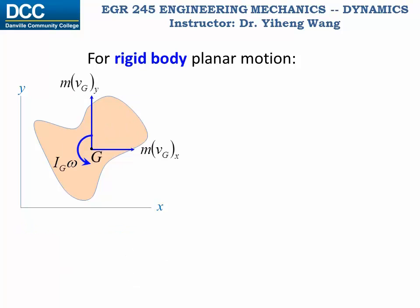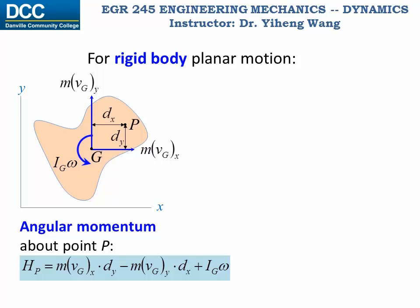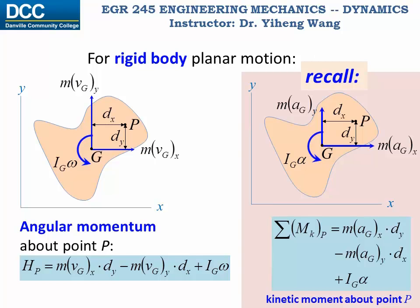Angular momentum is always calculated about a reference axis or reference point for planar motion. To calculate the angular momentum about an arbitrary point P, we treat the linear momenta as if they are forces and calculate their moments about point P, then add IG·omega as if it is a free couple moment. dx and dy are the moment arms for the linear momenta. This approach should look very familiar — it is what we did when finding the kinetic moment about point P when learning the equations of motion for rigid body planar motion.